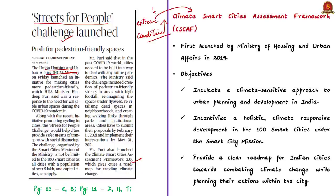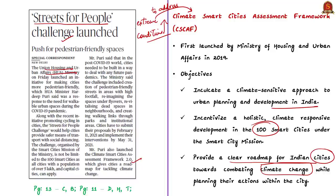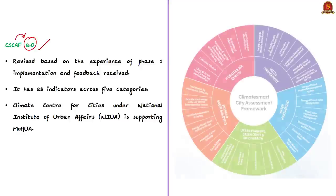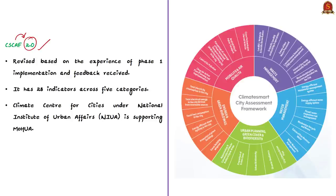This framework intends to inculcate a climate-sensitive approach to urban planning and development in India. It also incentivizes holistic climate-responsive development in 100 smart cities under the Smart Cities Mission. The objective is to provide a clear roadmap for Indian cities towards combating climate change. Based on the experience of phase 1, the Climate Smart Cities Assessment Framework 2.0 has been launched.